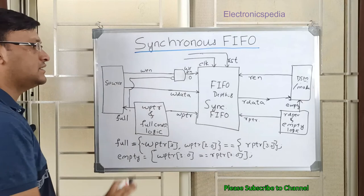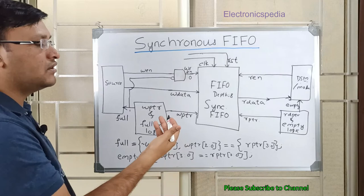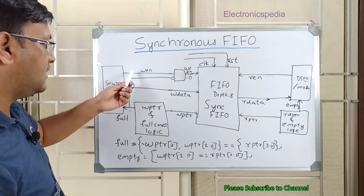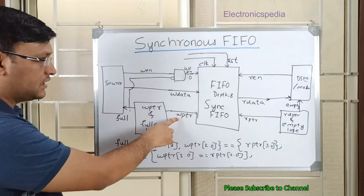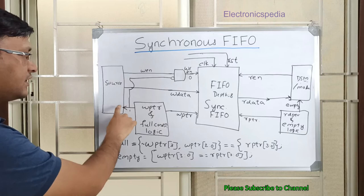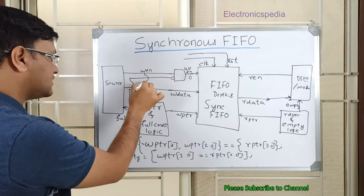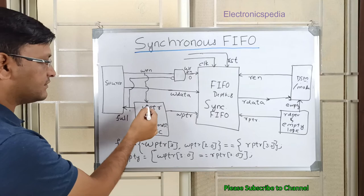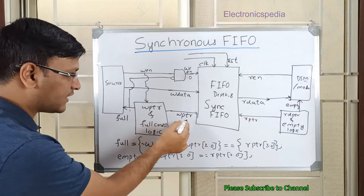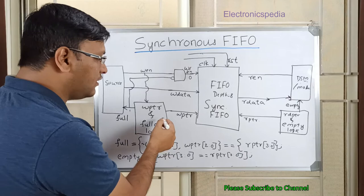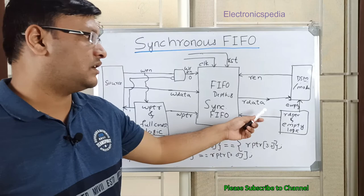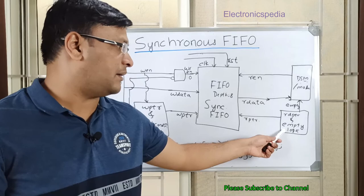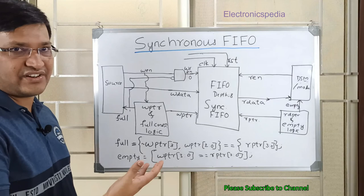This protection logic is on the write side. On the read side, if there is no data there is no meaning in reading, so similar protection applies. The write enable feeds into the write pointer and full condition logic — every time write enable comes from the source, the write pointer increments, after checking the full condition. Similarly, the read pointer increments every time read enable comes in, while checking the empty condition.